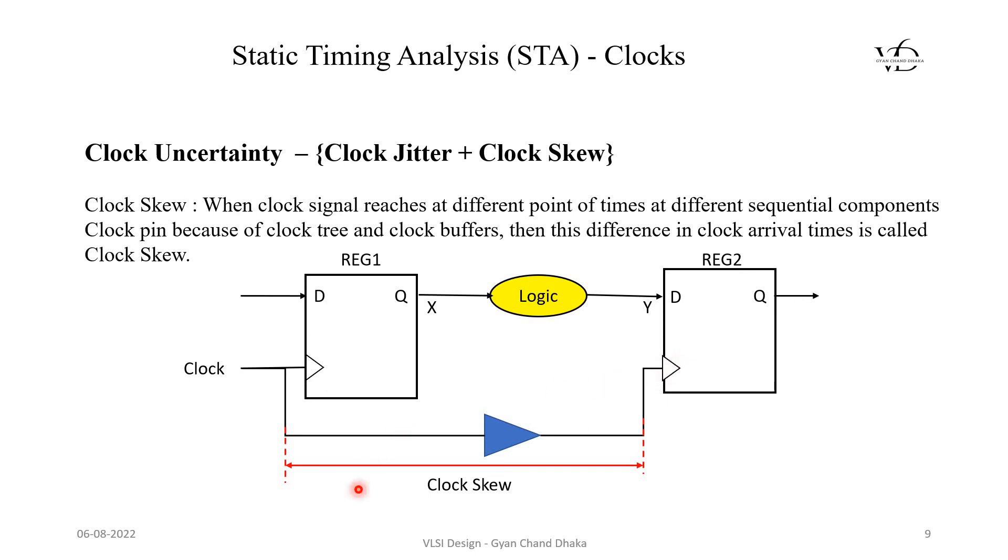This delta is nothing but called clock skew. The time difference between the clock signal at flip flop 1 to the clock signal at flip flop 2 is called clock skew.